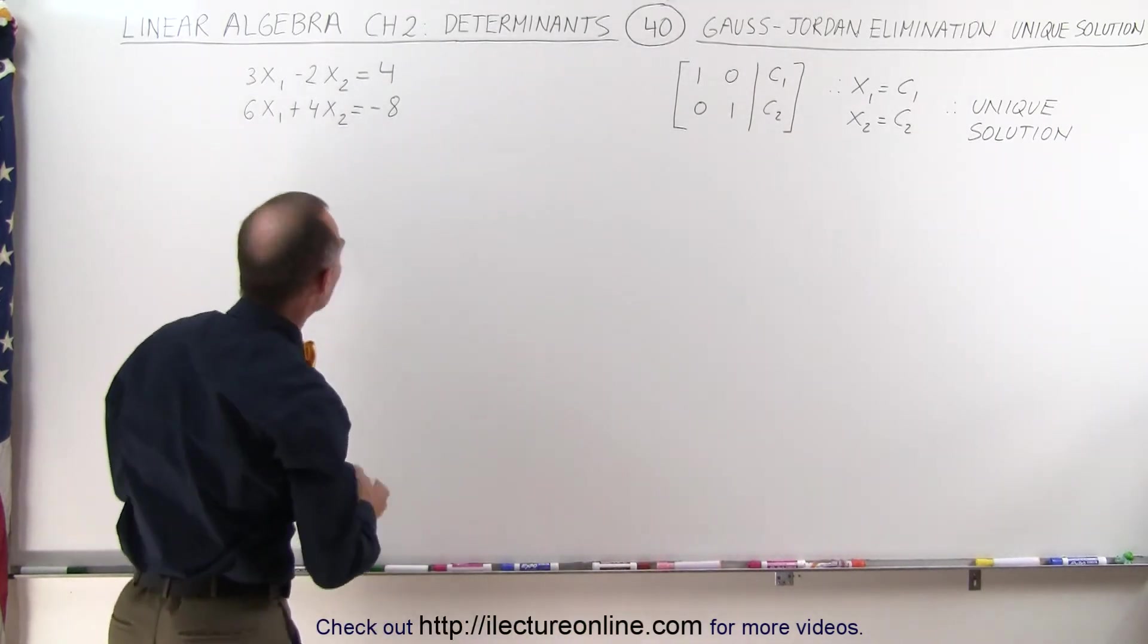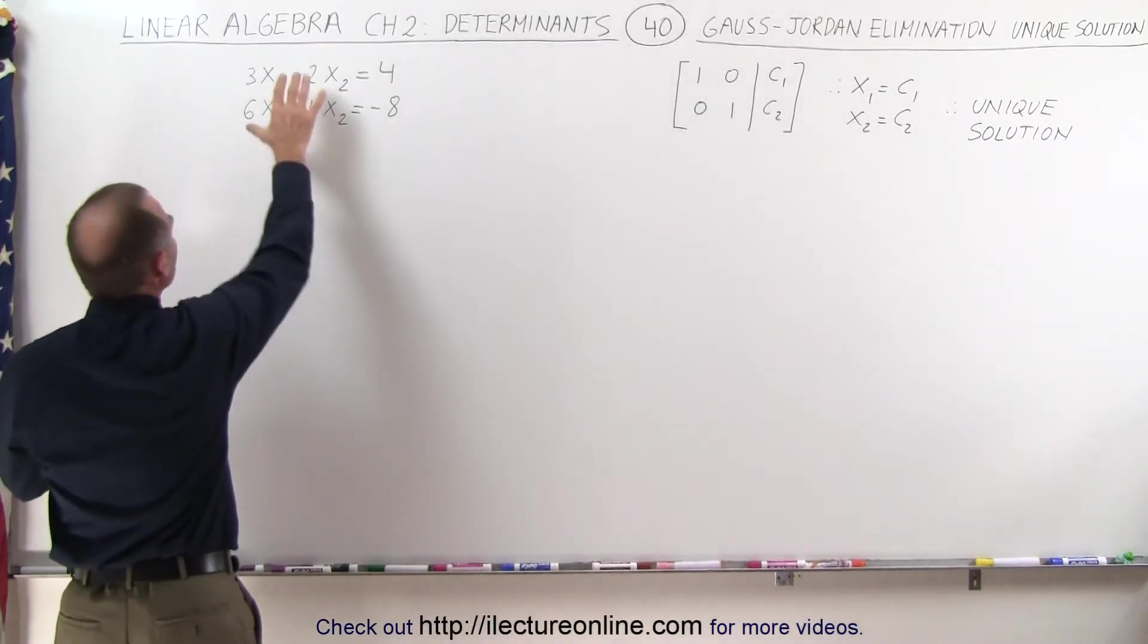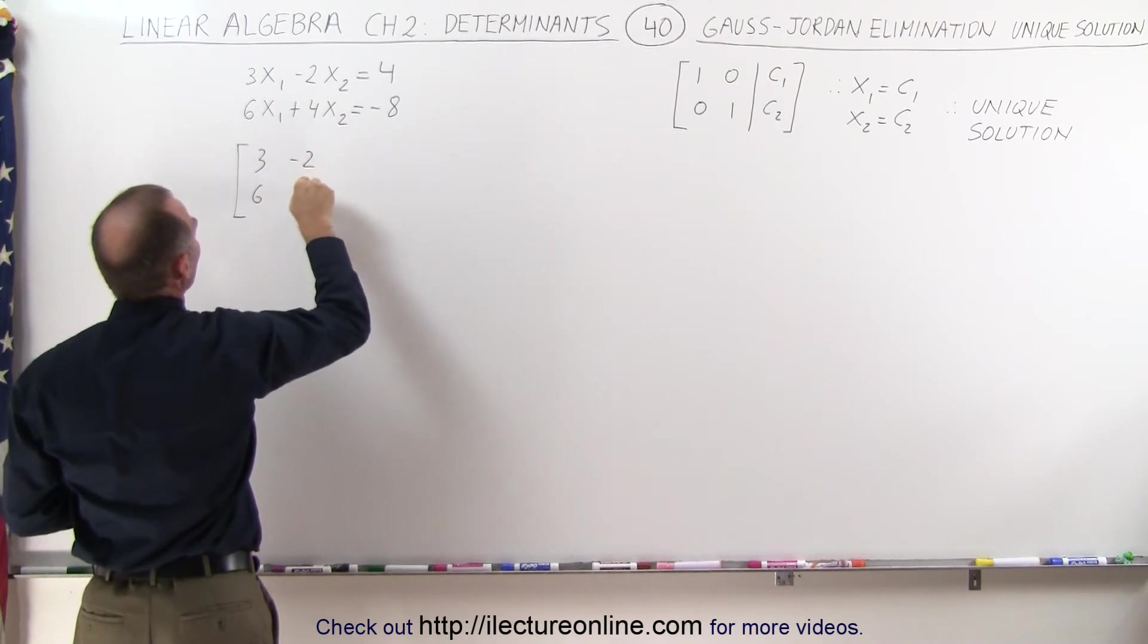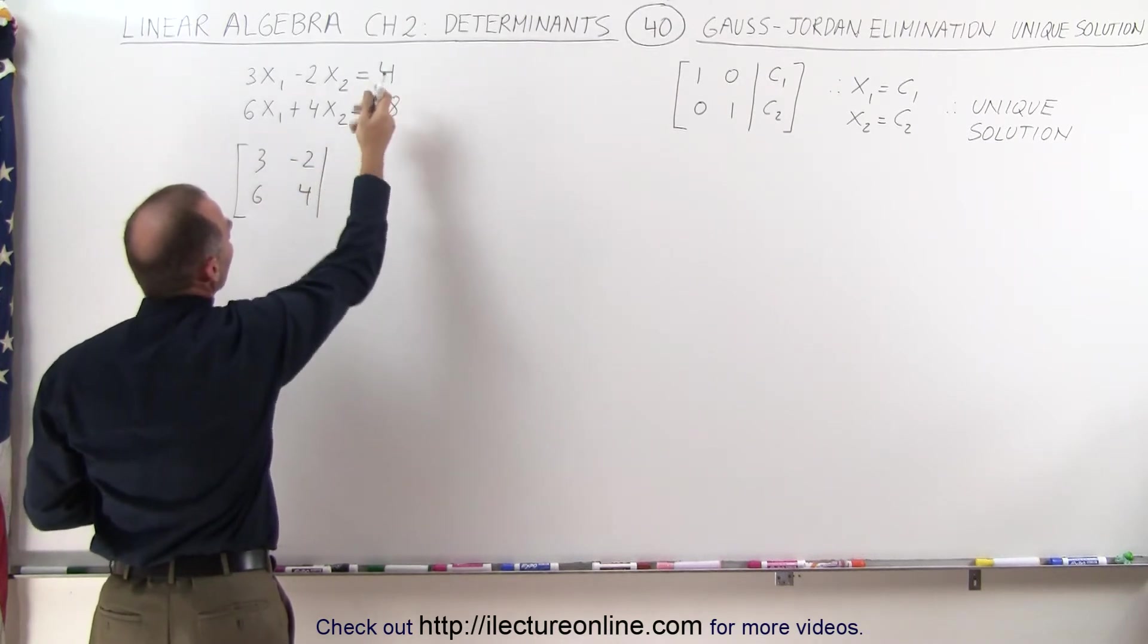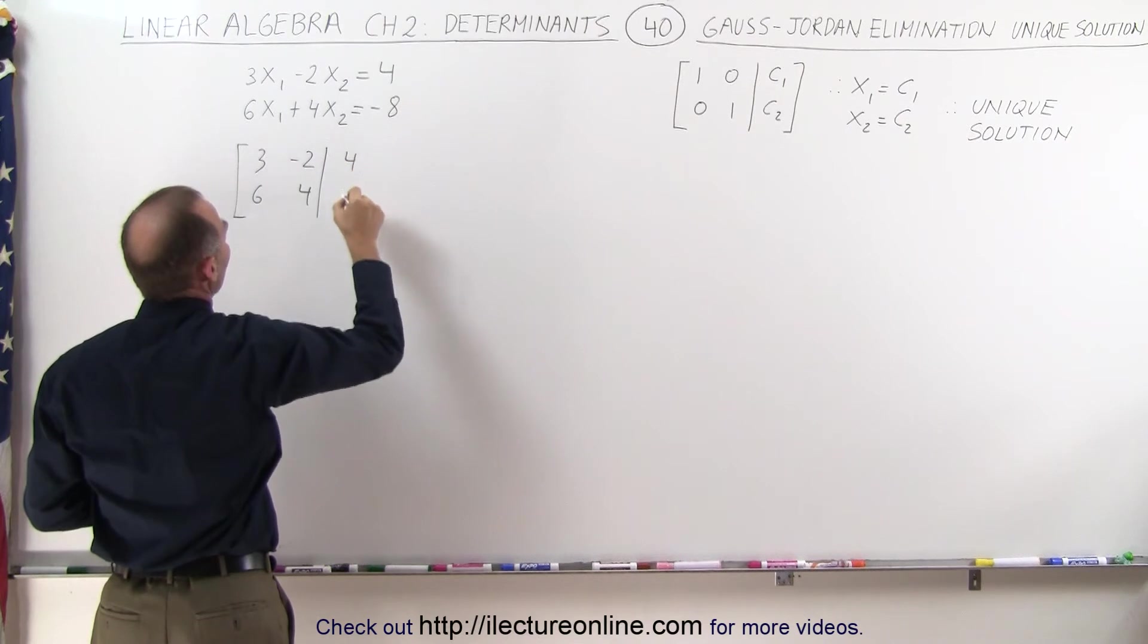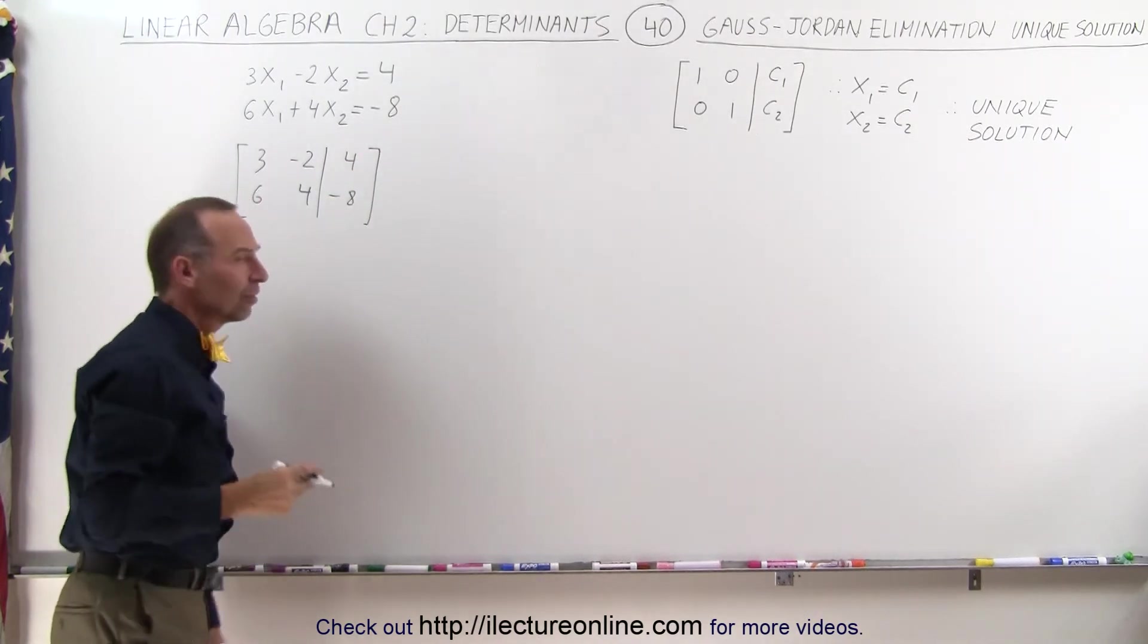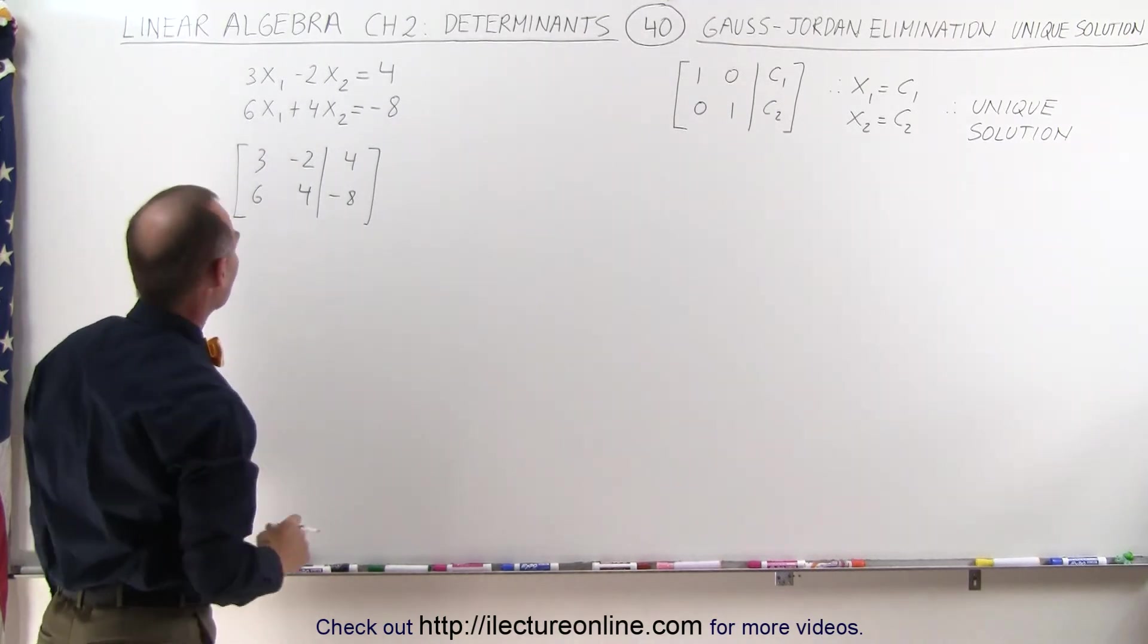Let's try that and see if that works here. So we take the coefficients of the two variables, we place those in a matrix: 3, 6, negative 2, and 4, and then we augment it with the constants on the other side of the equal sign, 4 and negative 8. Now we must reduce this to a form that looks like this.